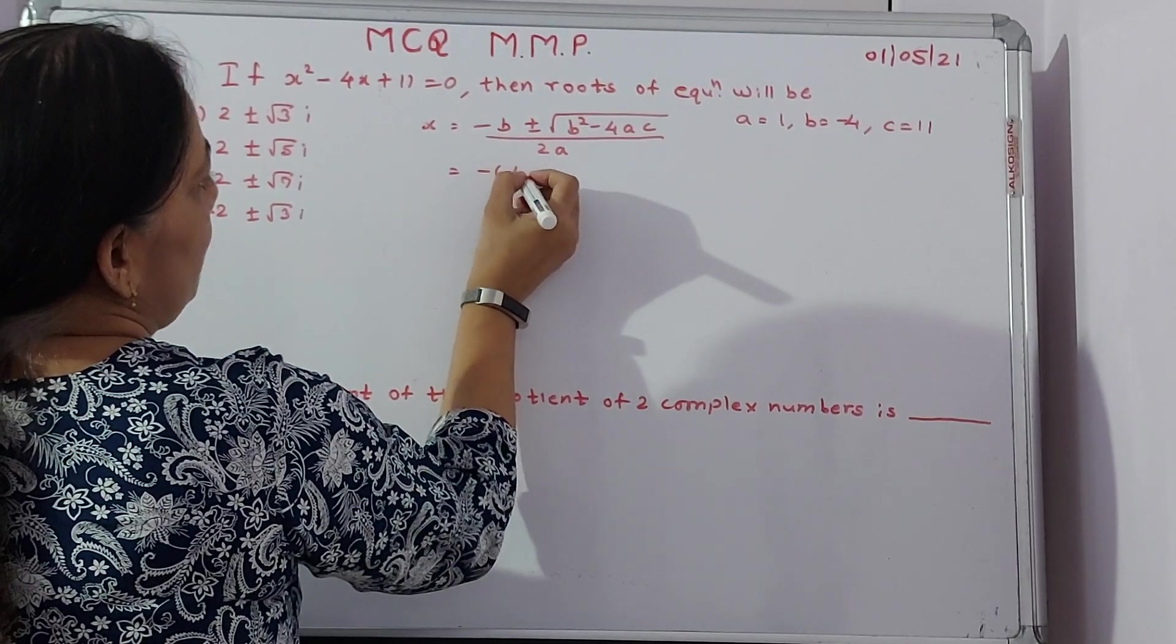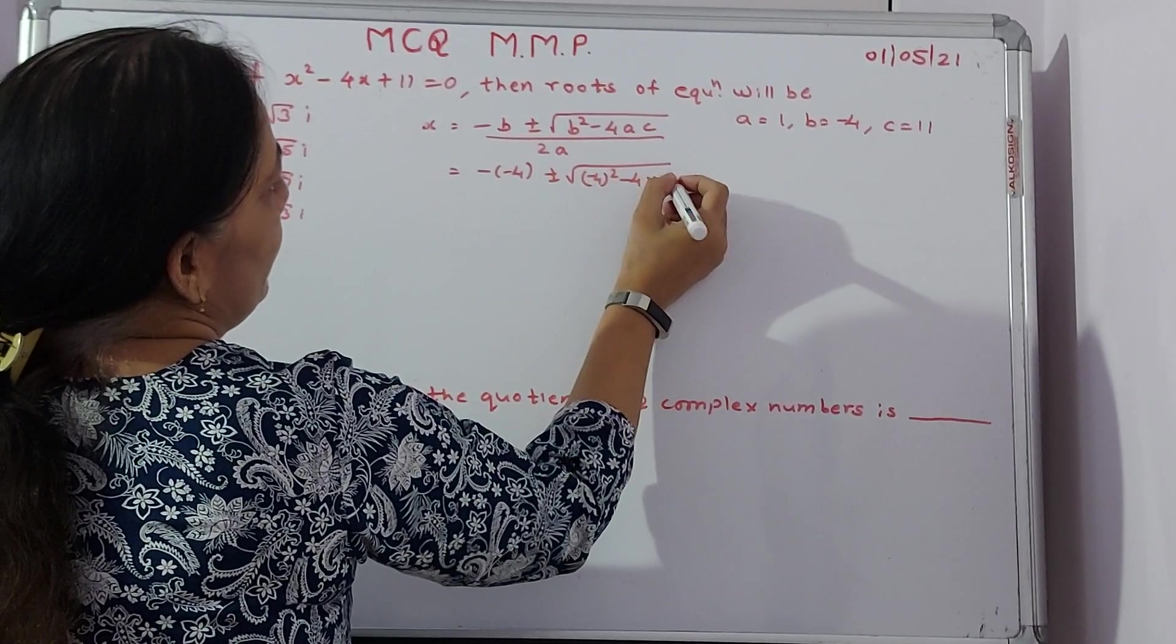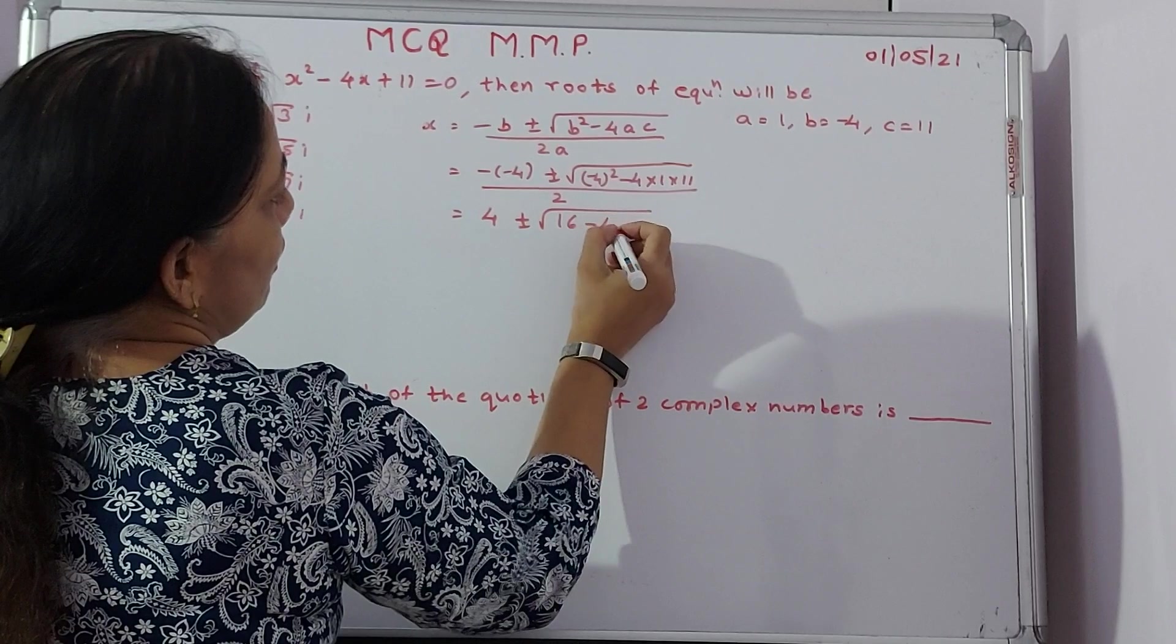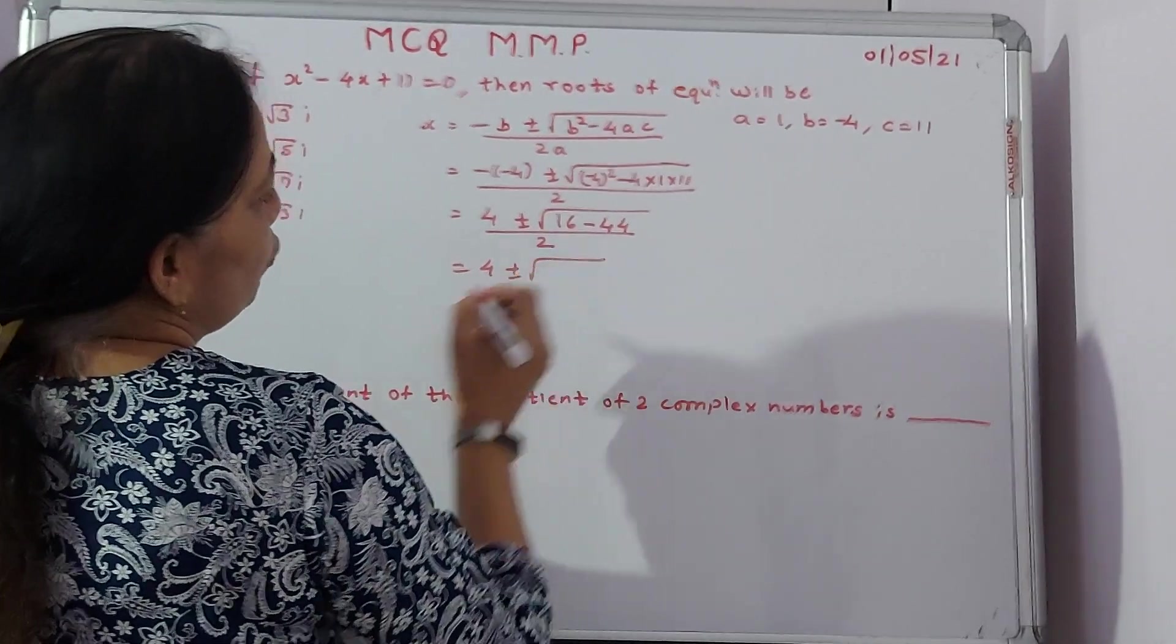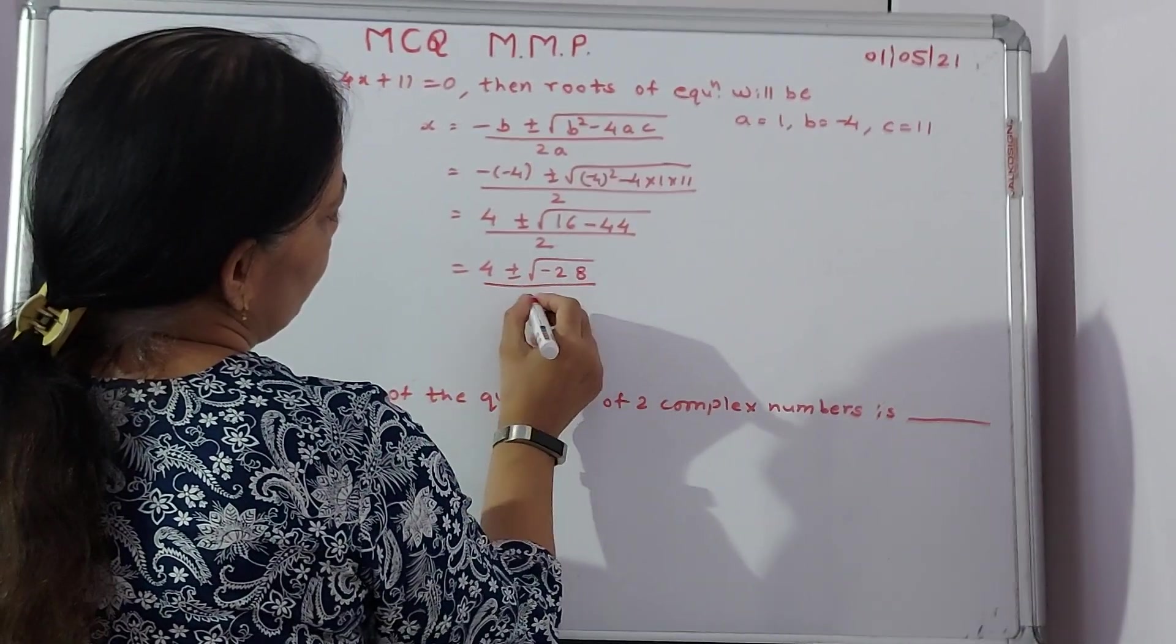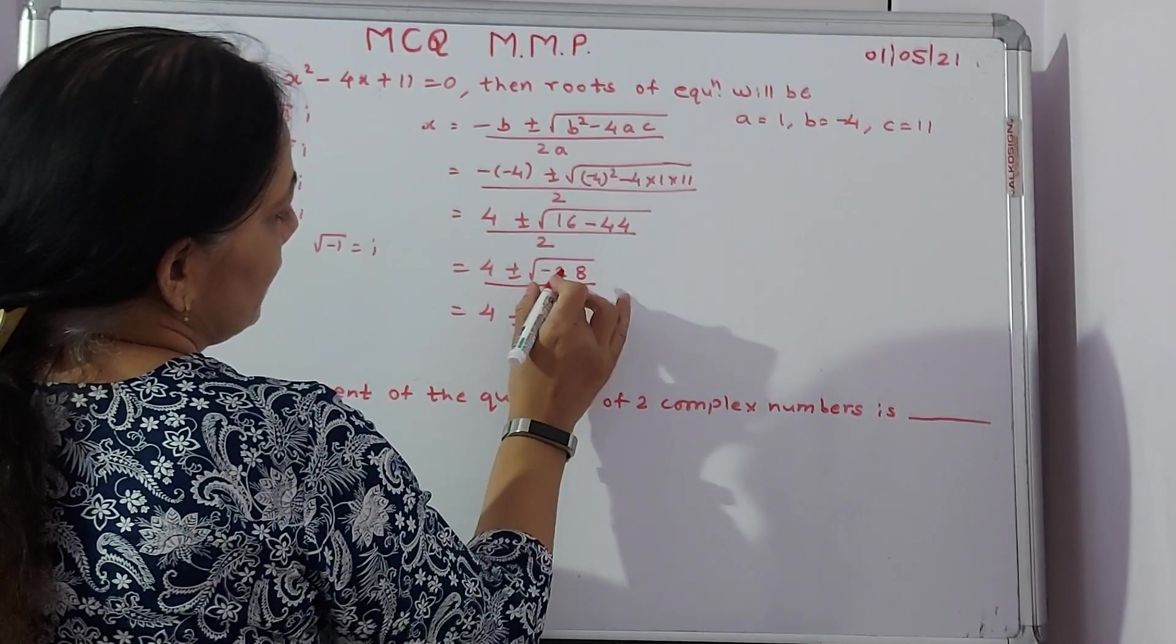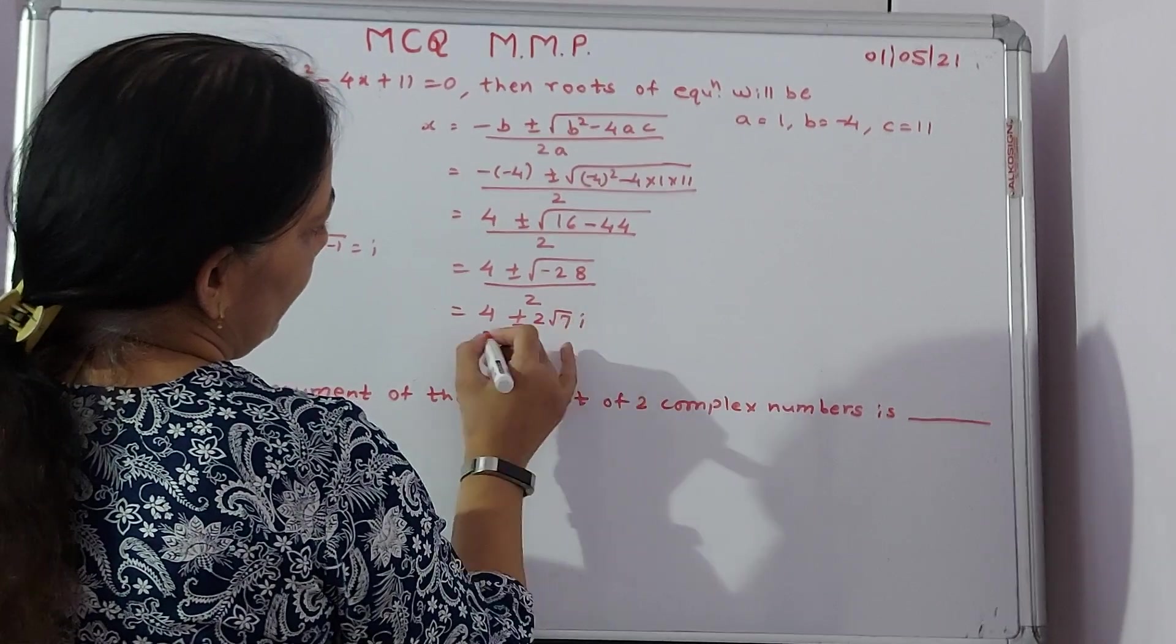Put the values over here. Minus B, so I will say minus of minus 4 plus or minus B square will be minus 4 square minus 4 into 1 into 11 divided by 2 because A is 1. This gives me 4 plus or minus under root 16 minus 44 divided by 2. If you find out the answer over here, you get 16 minus 44 will be minus 28 divided by 2. You know that under root of minus 1 will give me i. So here I can take 4 plus or minus 2 under root 7 times i divided by 2.